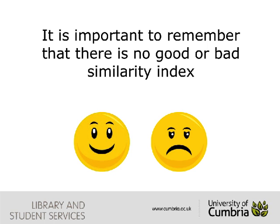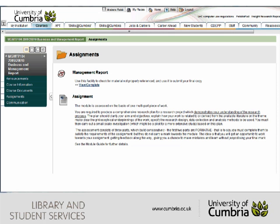It is important to remember that there is no good or bad similarity index, no pass or fail rate. Generally, the higher the percentage, the more likely it is that you may have plagiarised, but a 15% matched text may have more plagiarism than one rated 50%, as we will see later. Turnitin only indicates matched text — where it has previously seen the text. It cannot assess whether or not plagiarism has taken place; that requires a human being. So let's look at how to find your originality report, and then look at some examples of how to interpret it.